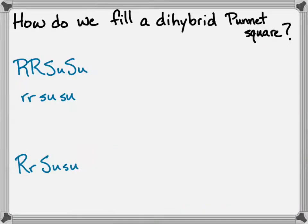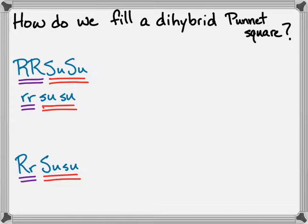So how do we get from these parental genotypes to the things that we put on the outside of a Punnett square, which would represent their gametes? For the homozygous dominant or homozygous recessive parents it's pretty easy, but in all cases we're looking at two different traits, and so the gametes are going to have two different traits represented in each gamete.